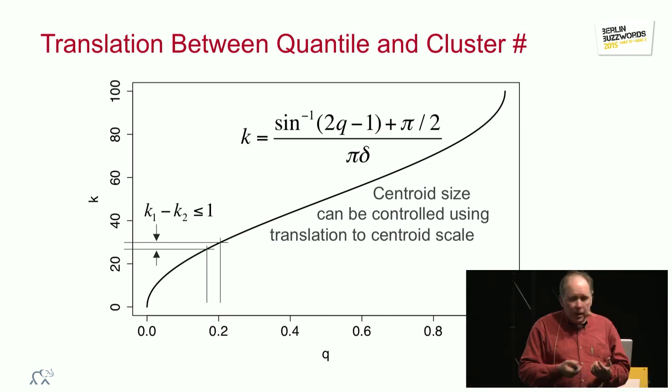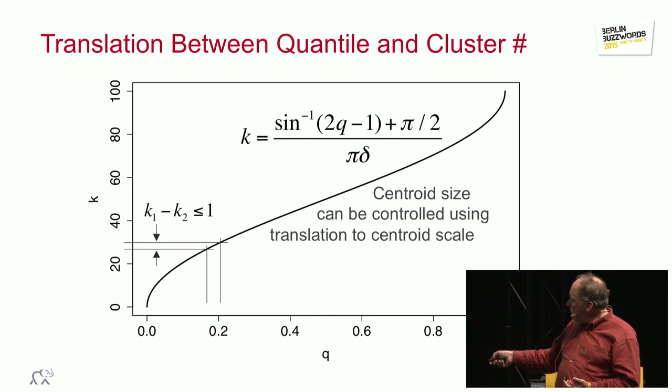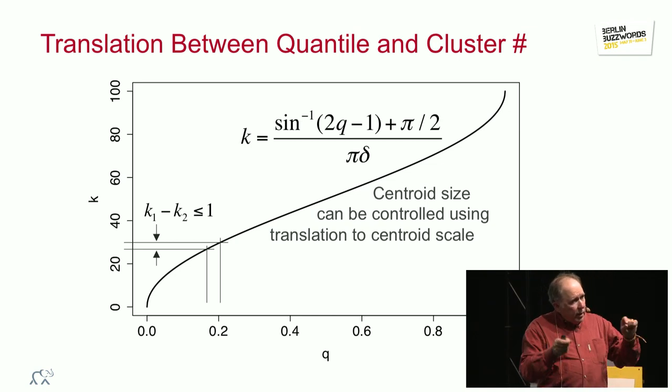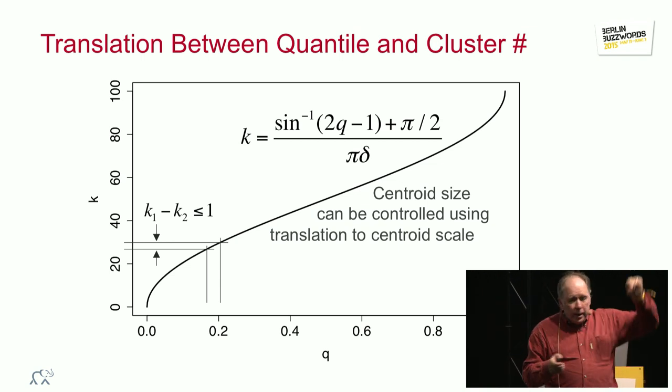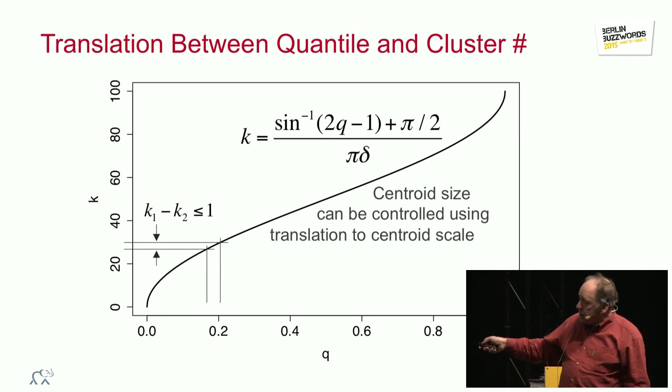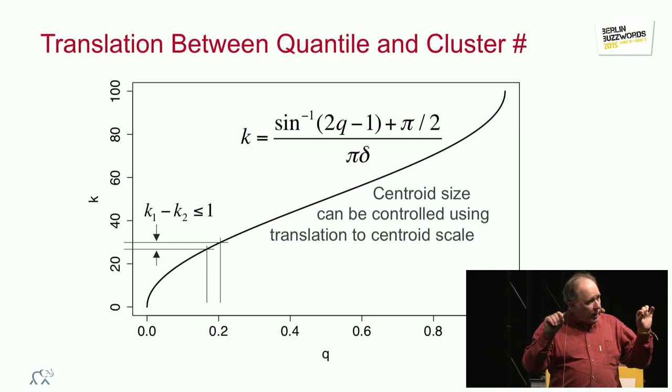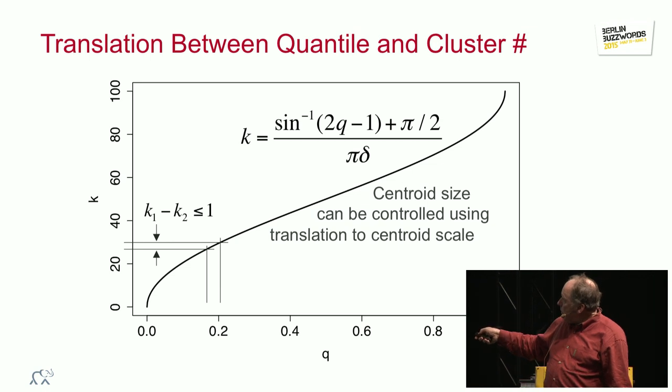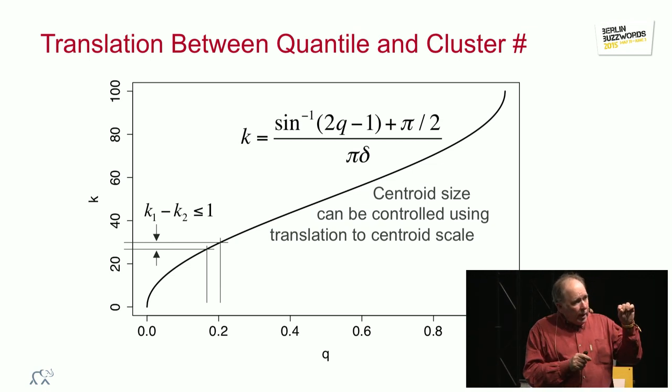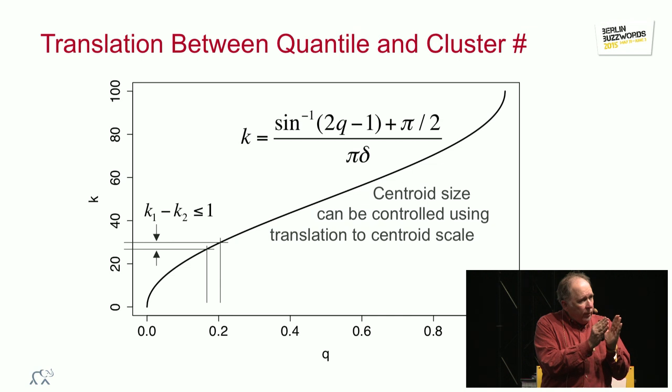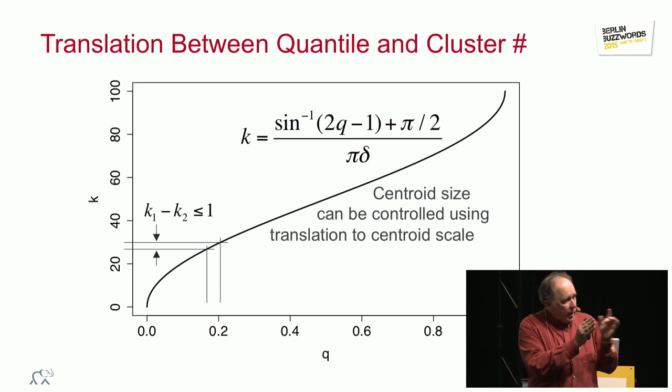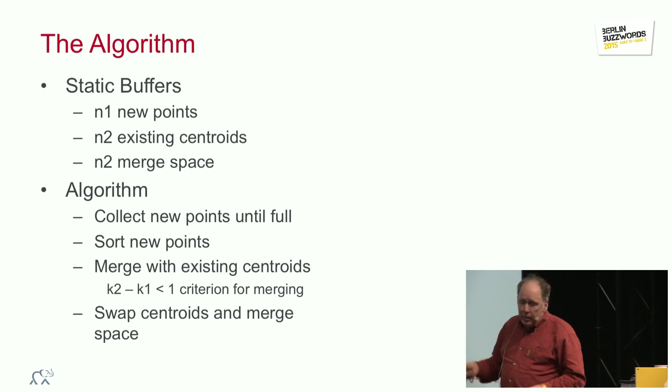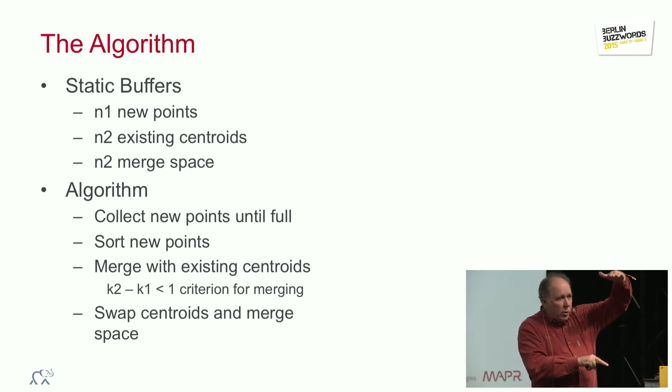The fundamental concept is that we have a mapping from the q space, the quantile, to the centroid index. This mapping is non-linear. It's steep at the ends, so that we have small clusters at the ends. Flat in the middle, relatively flat. And we allow every cluster to have a bound in k scale of at most one.